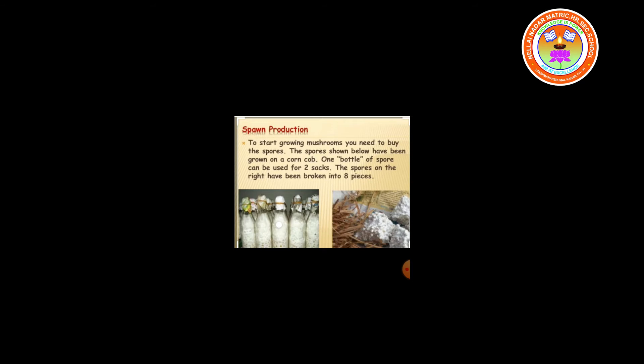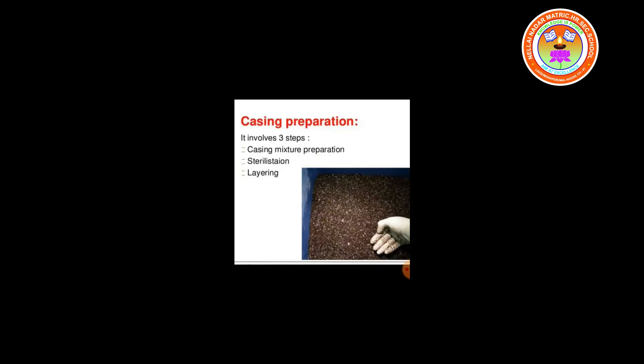The third stage of mushroom cultivation is casing. Compost is covered with a thin layer of soil. It gives support to the growing mushroom, provides humidity and helps to regulate the temperature. Mushroom casing is the last layer of media in commercial mushroom growth. Peat is used as it will hold 10 times its own weight in moisture and mushrooms thrive in this environment. Casing is a natural environment for mushroom to grow in.